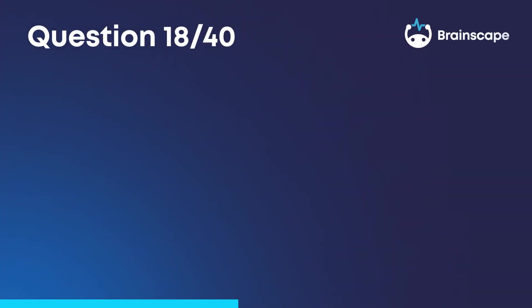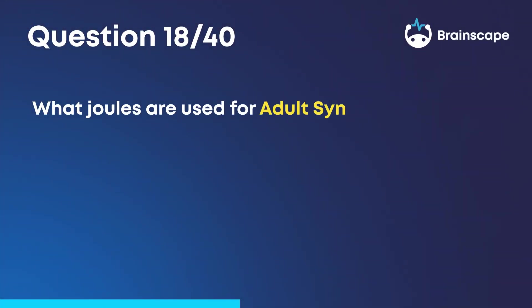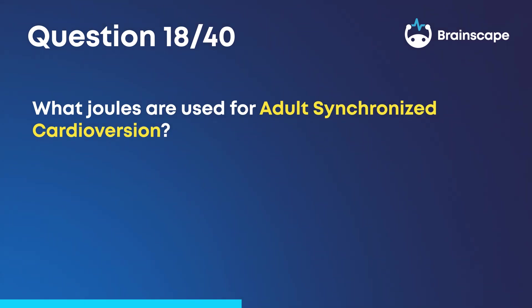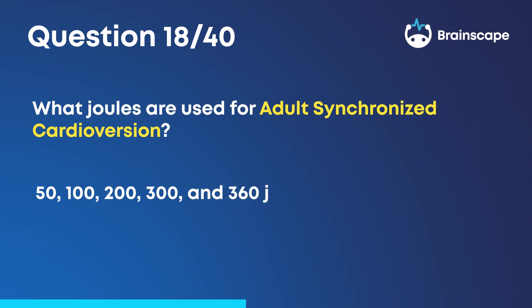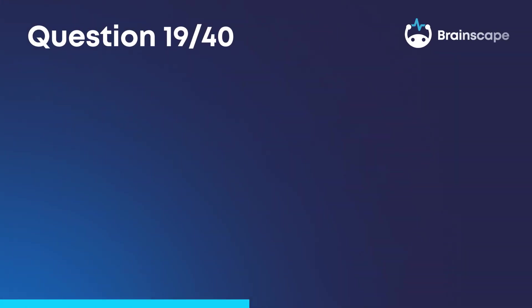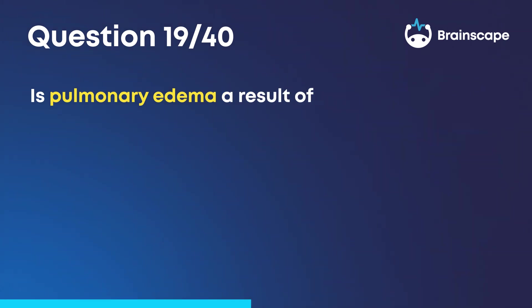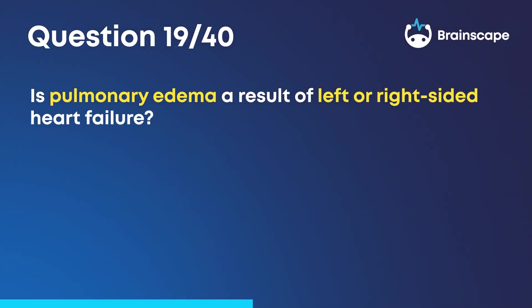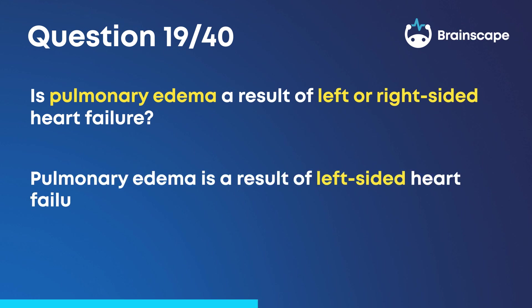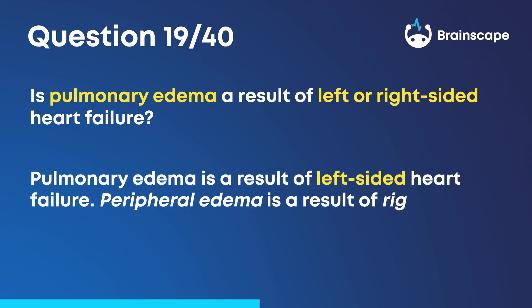Question 18: What joules are used for adult synchronized cardioversion? 50, 100, 200, 300, and 360 joules. Question 19: Is pulmonary edema a result of left- or right-sided heart failure? Pulmonary edema is a result of left-sided heart failure. Peripheral edema is a result of right-sided heart failure.